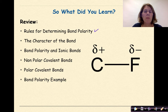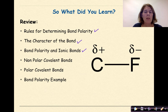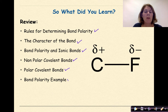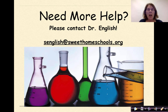So what did you learn? We talked about the rules for determining bond polarity, the character of the bond, ionic bonds, nonpolar covalent bonds, polar covalent bonds, and a bond polarity example. Need more help? Feel free to contact me. Have a great day!